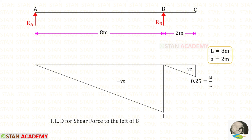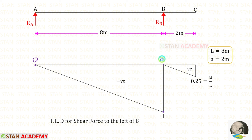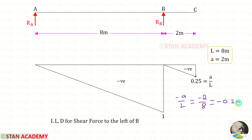Now let us draw the ILD for the shear force to the left of B. At point A the ordinate will be 0. At point B the ordinates will be minus 1 and 0. At point C the ordinate will be minus A upon L — so minus 2 upon 8 = minus 0.25. Now we are going to end this session. Thank you for watching this video.